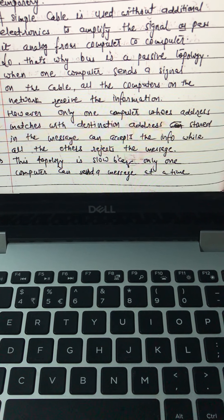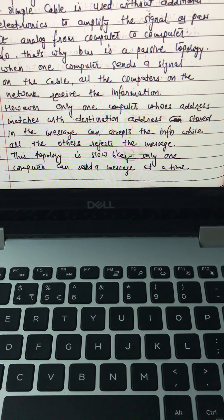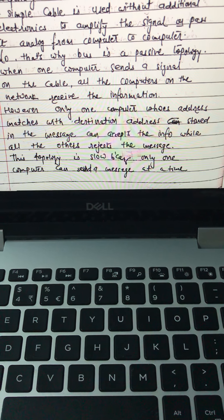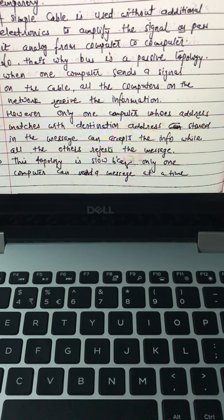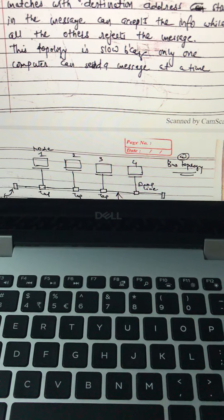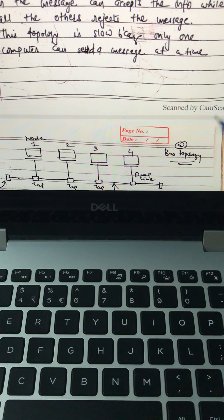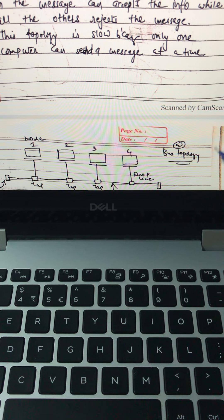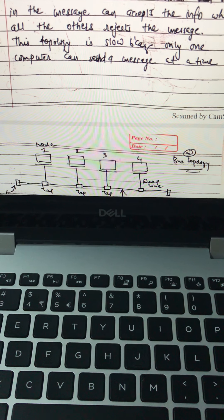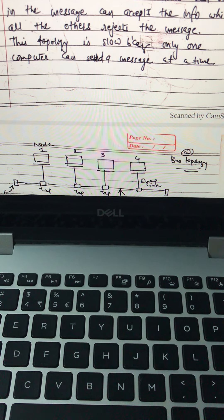When one computer sends a signal on the cable, all the computers on the network receive the information. However, only one computer whose address matches with the destination address stored in the message can accept the information while all others reject the message. But the disadvantage of this system is it slows your computer because every time you send it, it will be received to each and every end.